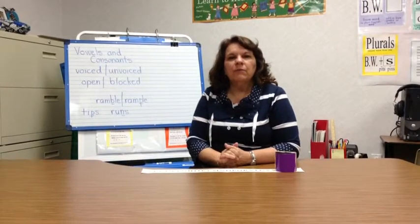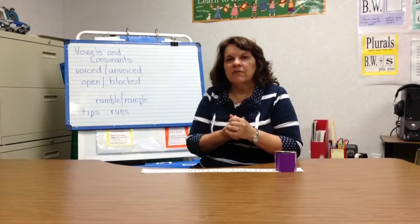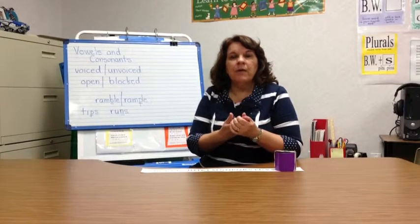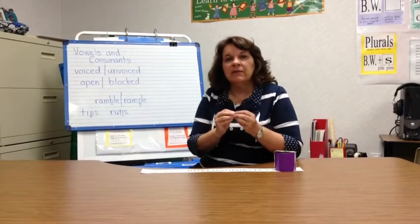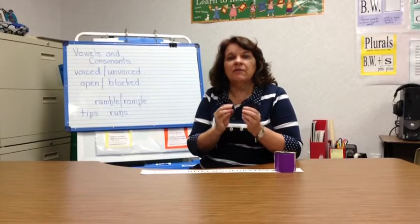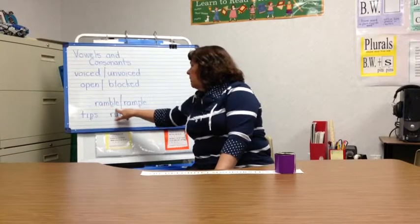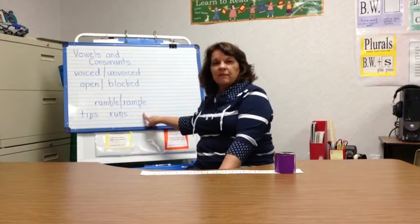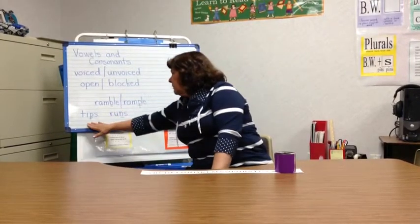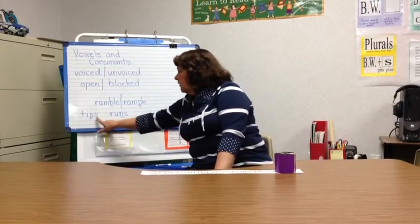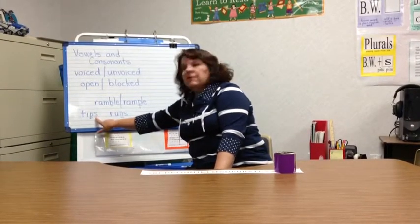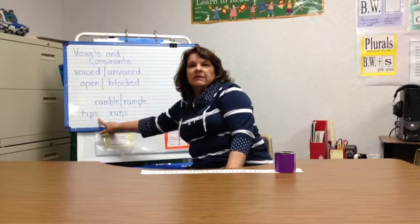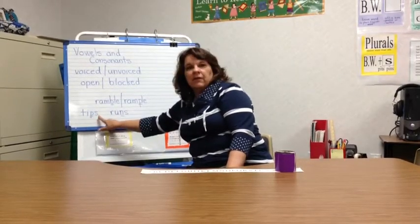This is important because sometimes when you're spelling words, some letters have a voiced sound and an unvoiced sound. Sometimes children can confuse a letter because they think it's an unvoiced sound when it's really a voiced sound. For instance, in the word 'ramble,' they might spell it with a P because they didn't know the difference between voiced and unvoiced sounds. Or in the words 'tips' and 'runs' — the S can make the S sound because this letter is unvoiced, and so is the S sound, giving you an unvoiced next to another unvoiced sound.